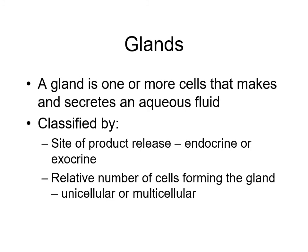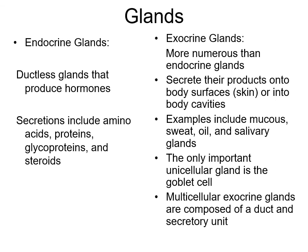A gland is one or more cells that makes and secretes an aqueous fluid. Glands are classified by the site of product release - whether they're endocrine or exocrine. Endocrine means cells produce their product, it gets released, enters the bloodstream, and travels to a distant target cell with a receptor for that specific hormone - think hormones. Exocrine means cells produce their product and it goes out through a duct onto a surface - like sweat, oil, mammary, or ceruminous wax glands.